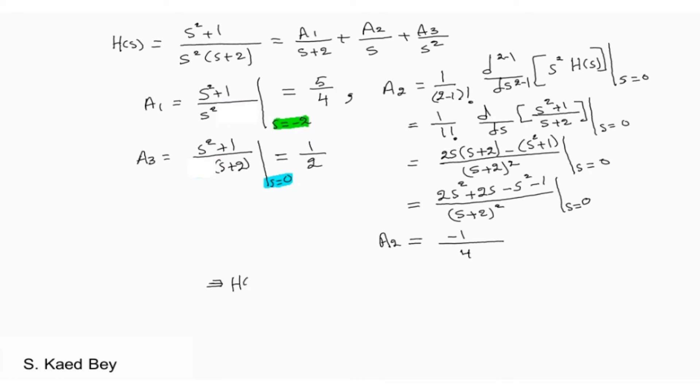Now we have obtained A1, A2 and A3. We can rewrite the fraction H of S as a sum of simpler fractions. This will allow us to use Laplace table in order to find the inverse of H of S.